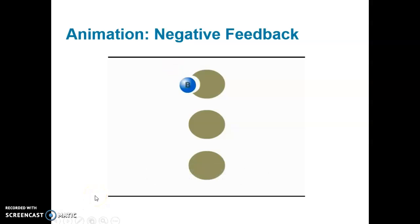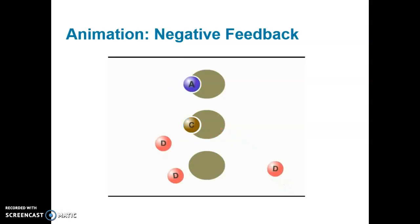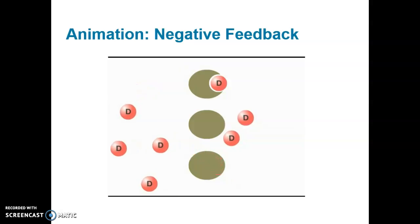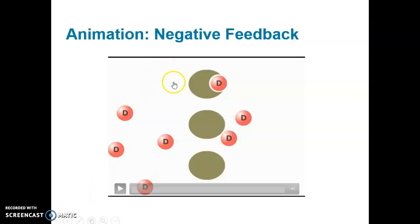This animation illustrates negative feedback, or feedback inhibition, in the regulation of a chemical reaction sequence in a cell. The sequence involves four molecules — A, B, C, and D — with three different enzymes catalyzing the conversion of one molecule to the next. The final product D inhibits the first enzyme. When the concentration of D rises to a certain point, the reaction slows down, because the accumulation of molecule D shuts down the process of creating more molecule D.